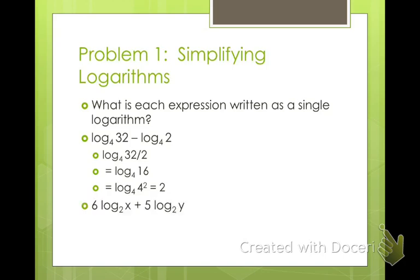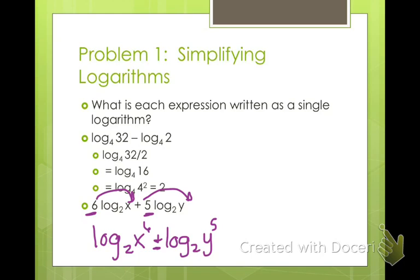What about this one? 6 log base 2 of x plus 5 log base 2 of y. We need to use order of operations. So what are we going to do first? First we're going to have to deal with this coefficient that's in front of both of these. So what do we do with those? Those become our powers, because multiplying means raised to a power. So I have log base 2 of x to the 6th plus log base 2 of y to the 5th.